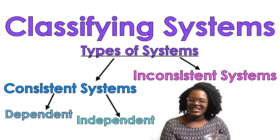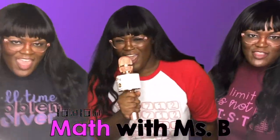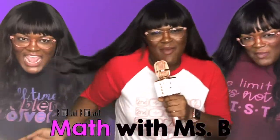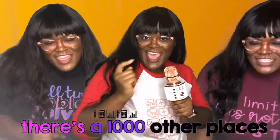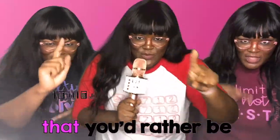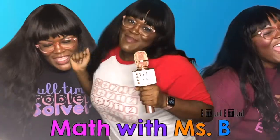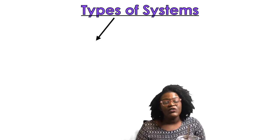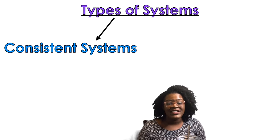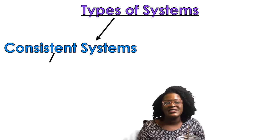Let's go — math with this B! There are a thousand other places you'd rather be, but you're watching math with this B. The first type of system you're going to have is a consistent system.